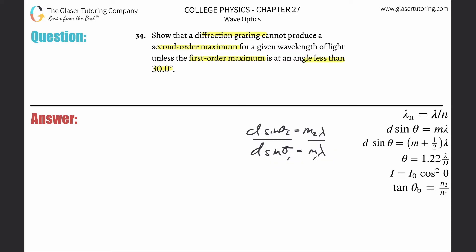And notice now what will cancel. The d's cancel, the wavelengths cancel. And then we have now sine theta 2 over sine theta 1 will be equal to m2 over m1.